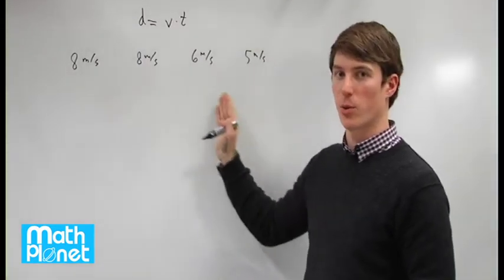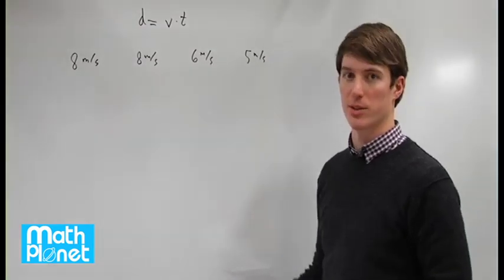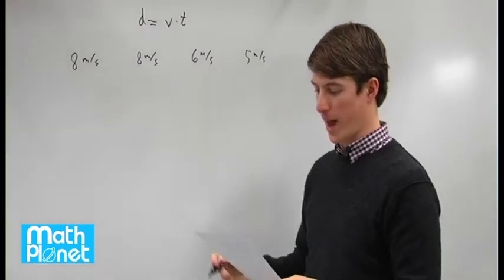So we need to find the time for each of these four laps and then add them up together to get the total time so that we can find the average speed at the end.